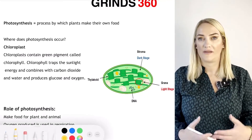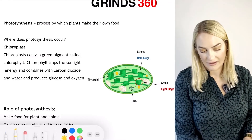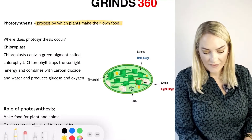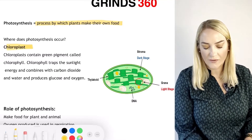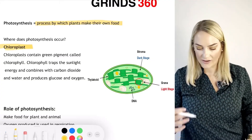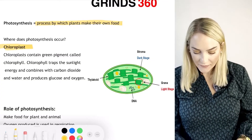Photosynthesis is the process by which plants make their own food. Where does it occur? It occurs within the chloroplast. If we look at this diagram here of the chloroplast...